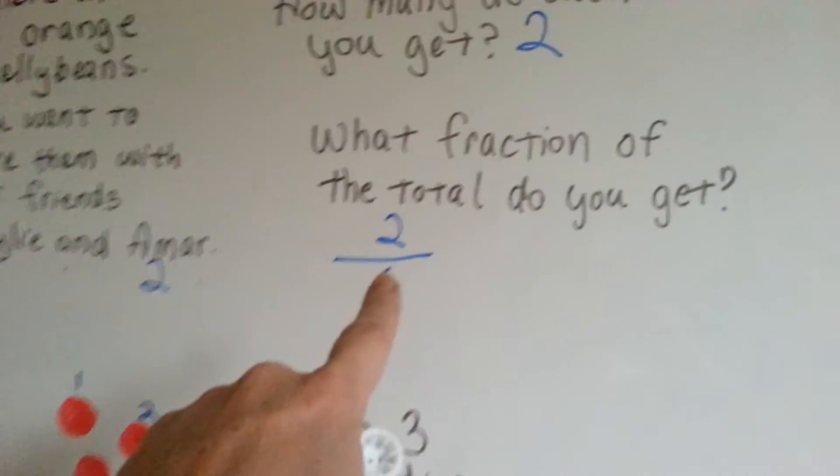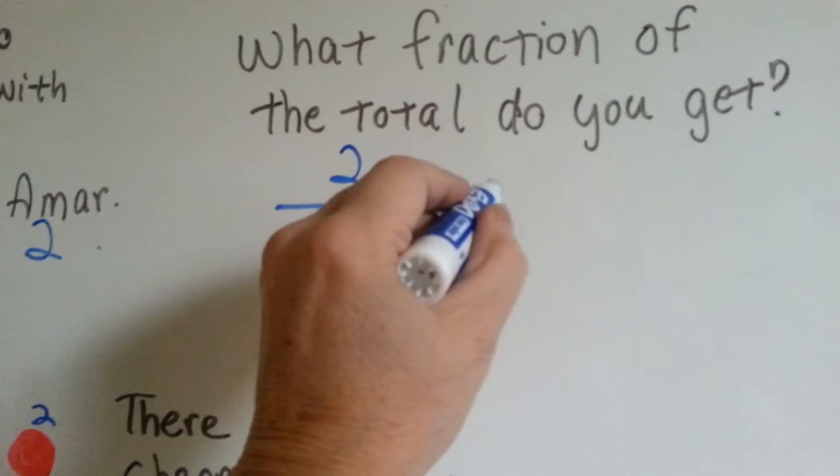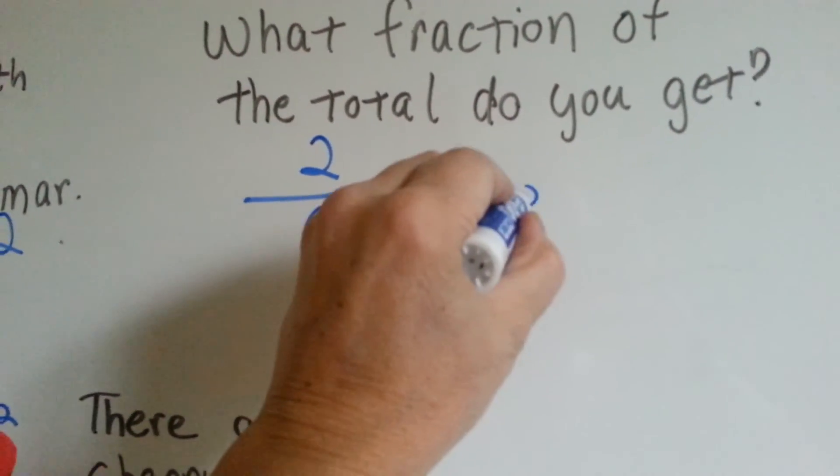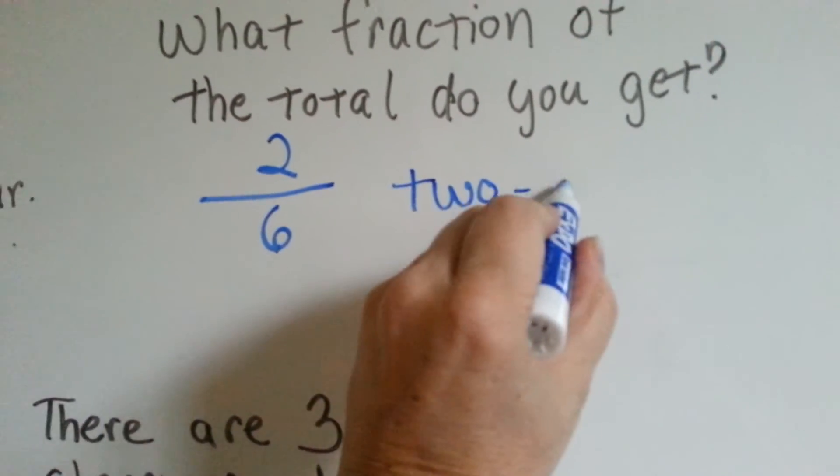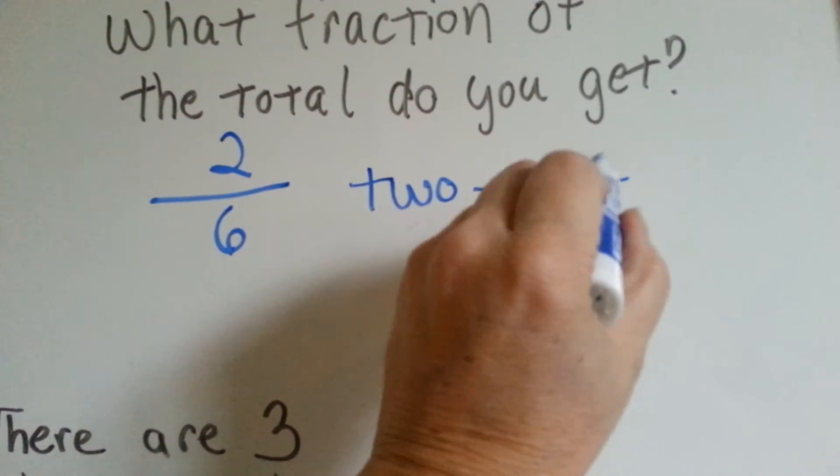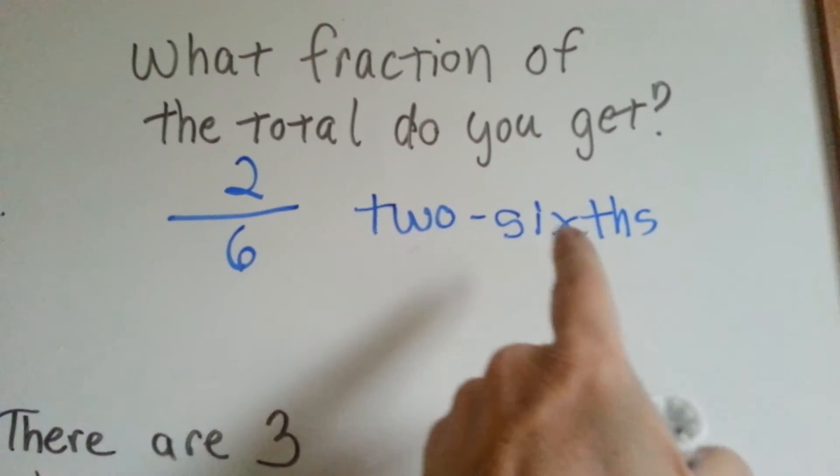That's how many brownies you got. For the jelly beans, you got two sixths. Two, hyphen, S-I-X-T-H-S. Two sixths.